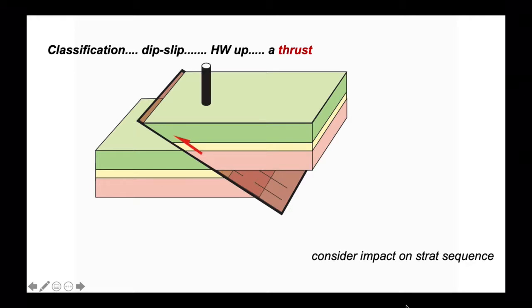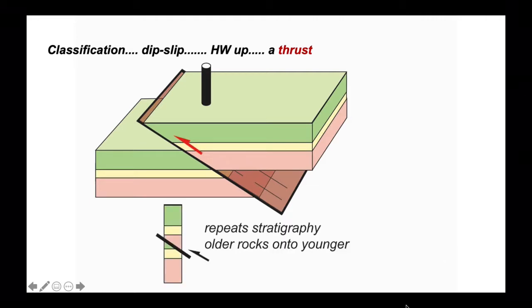Let's see what the relationship of the stratigraphy is now across the fault plane using a vertical borehole cut down through the strata. We can see that the stratigraphy is repeated in the borehole. The yellow unit appears twice, older rocks are placed on top of younger and this is a feature of thrust faults.